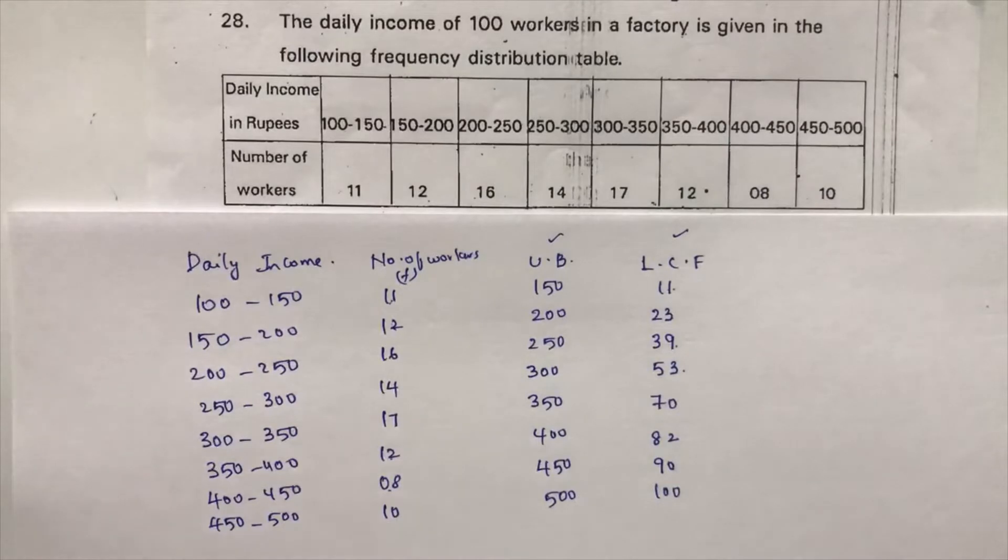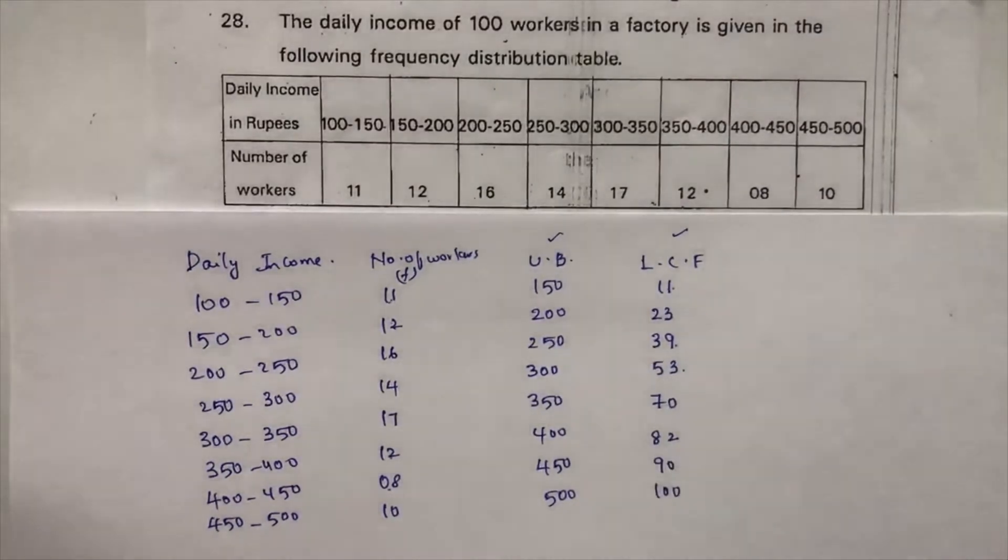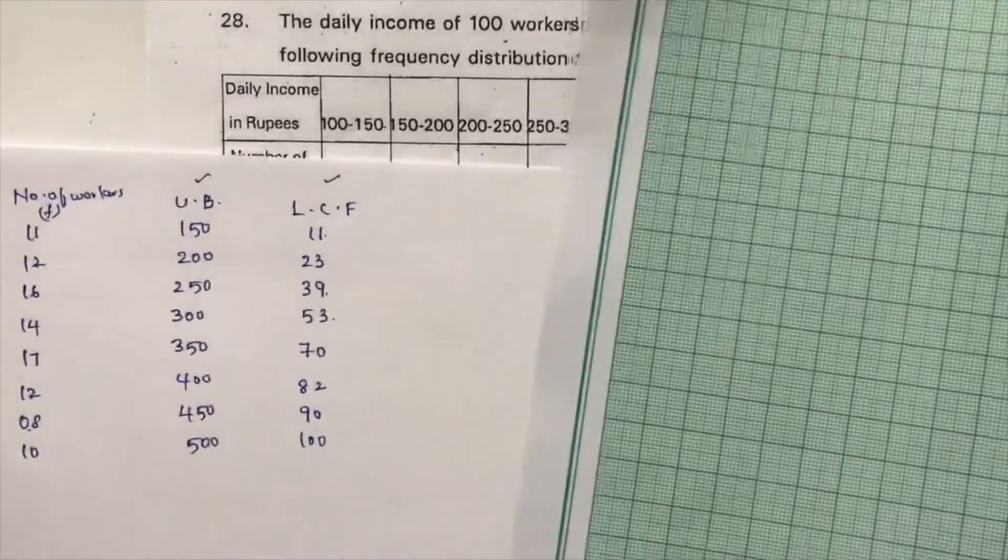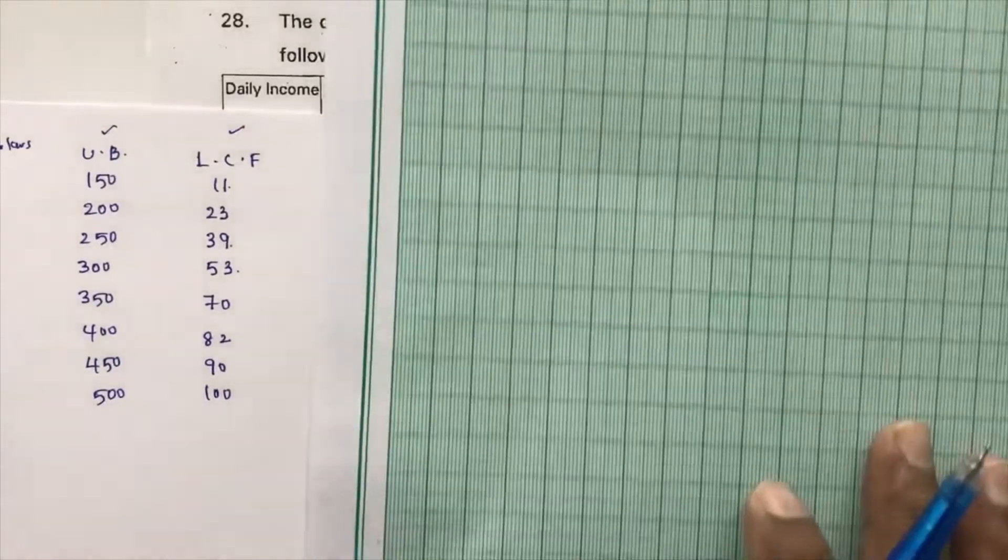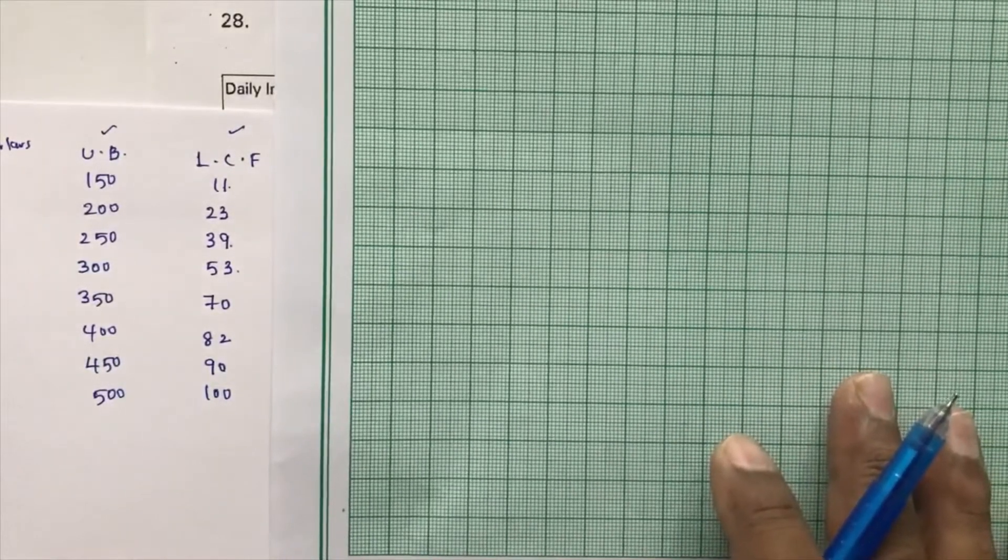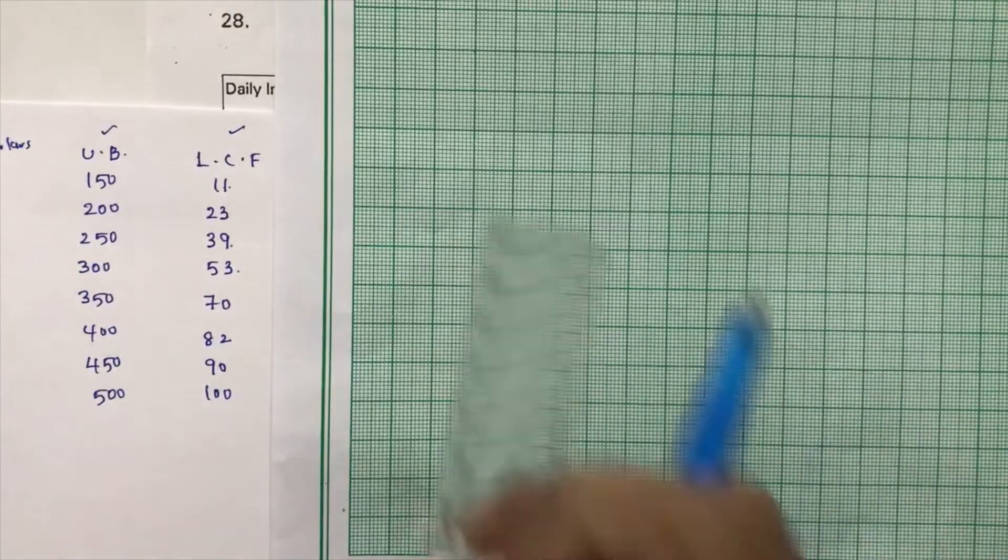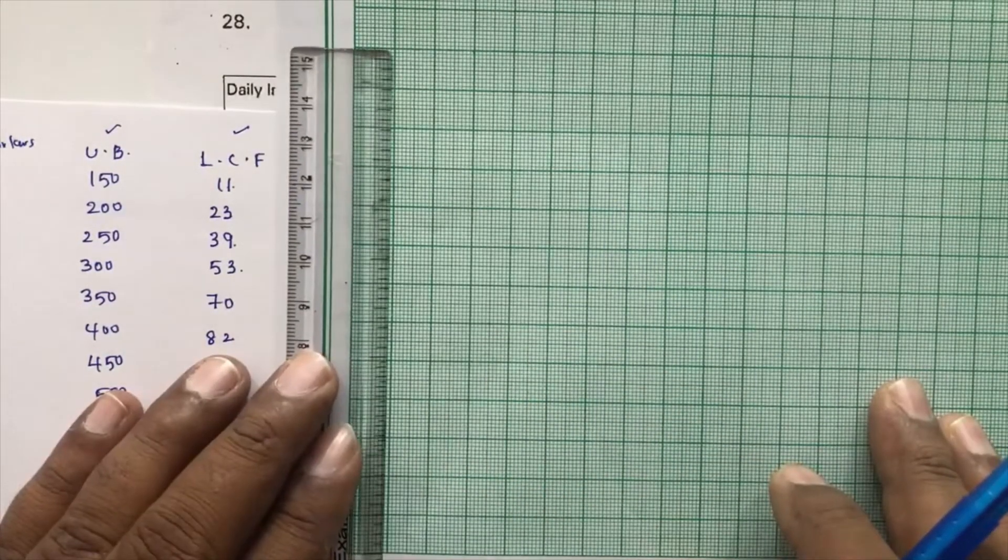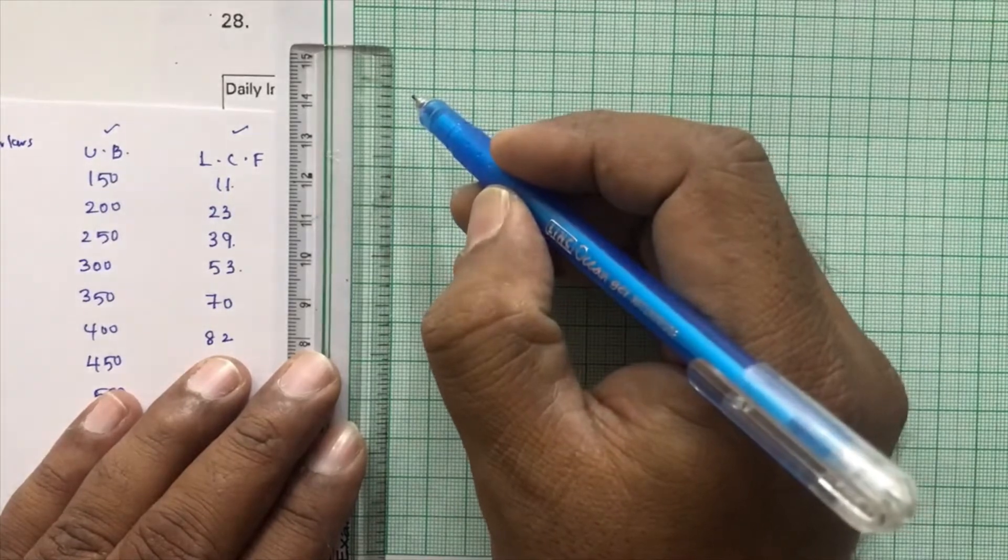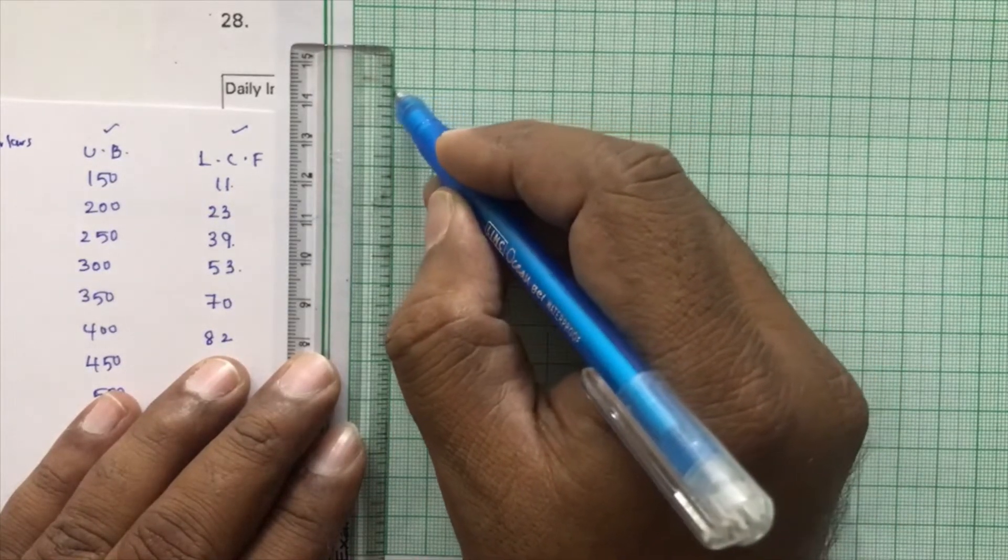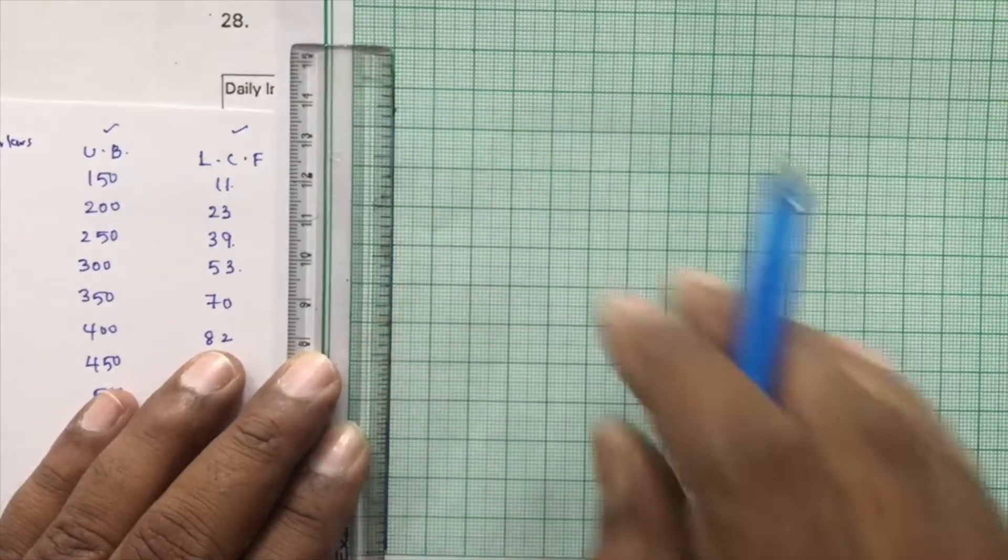Now here, see, as we need to plot these two values to get the median, so I will draw. See here, I will take this graph paper. So I will start doing. See, I am doing with pen, but you have to do compulsory with pencil.